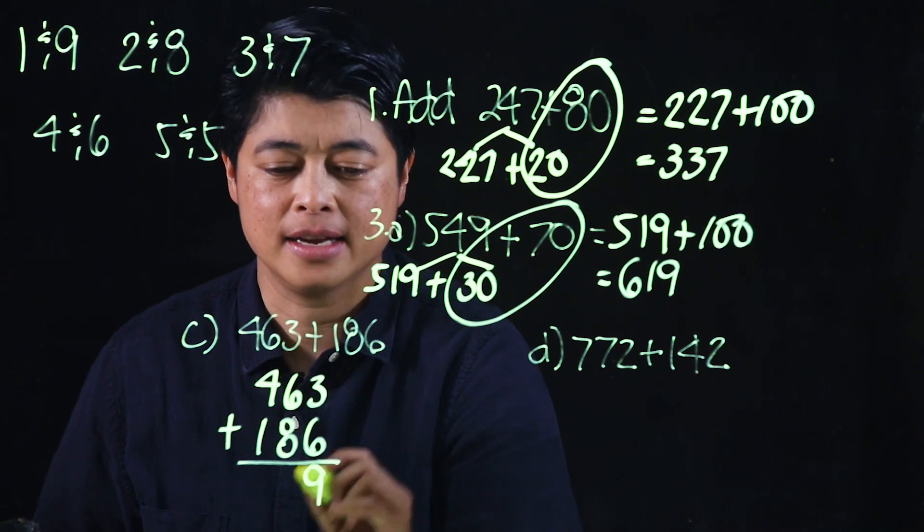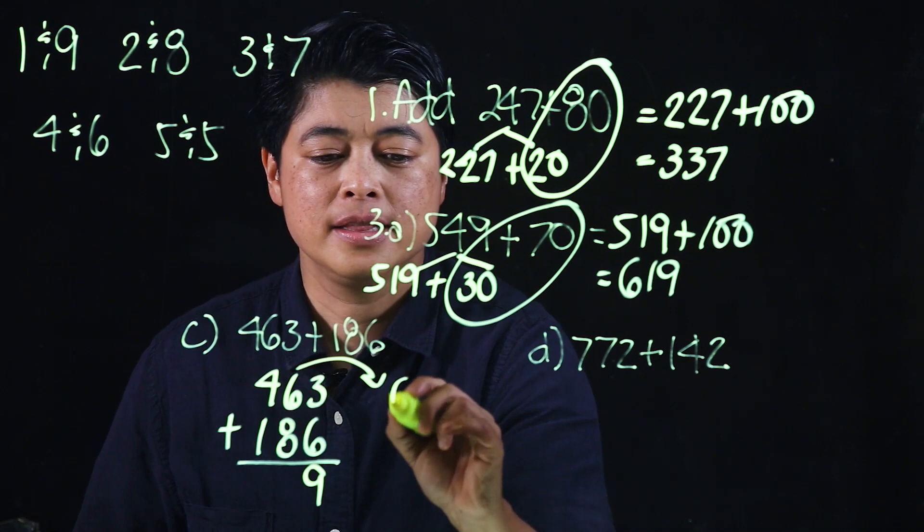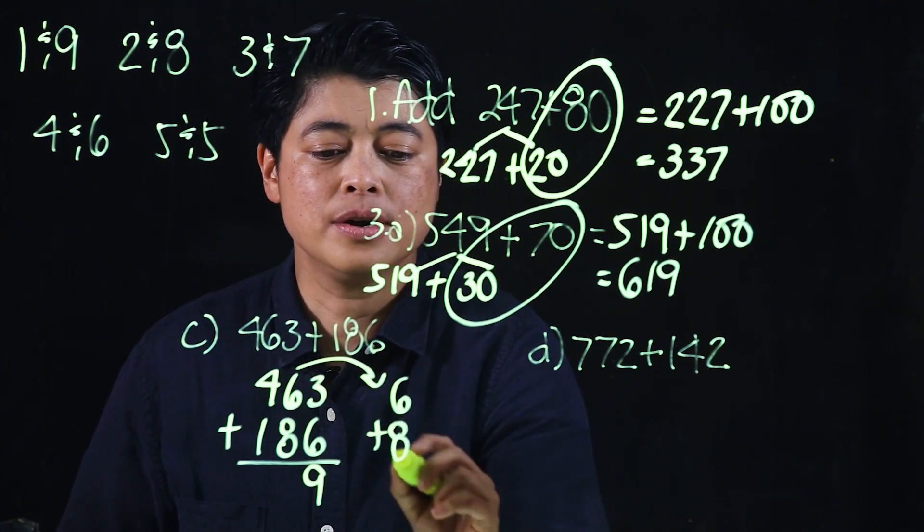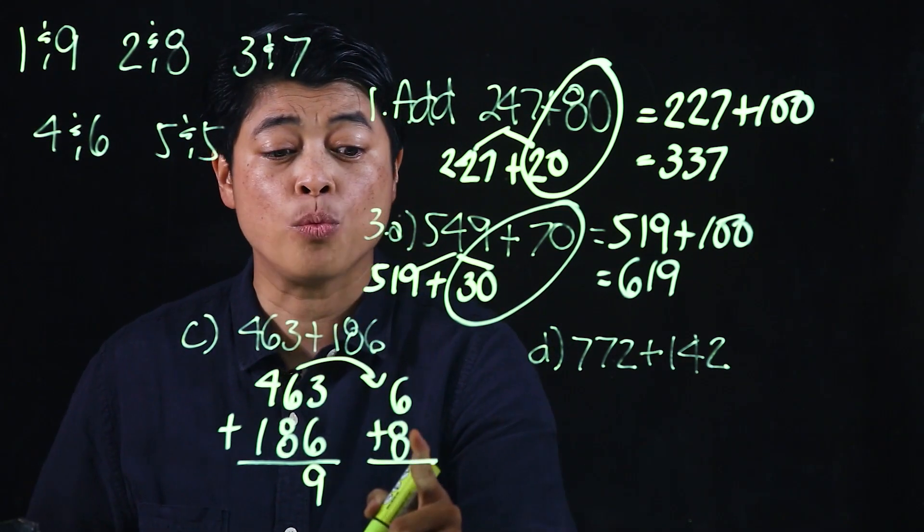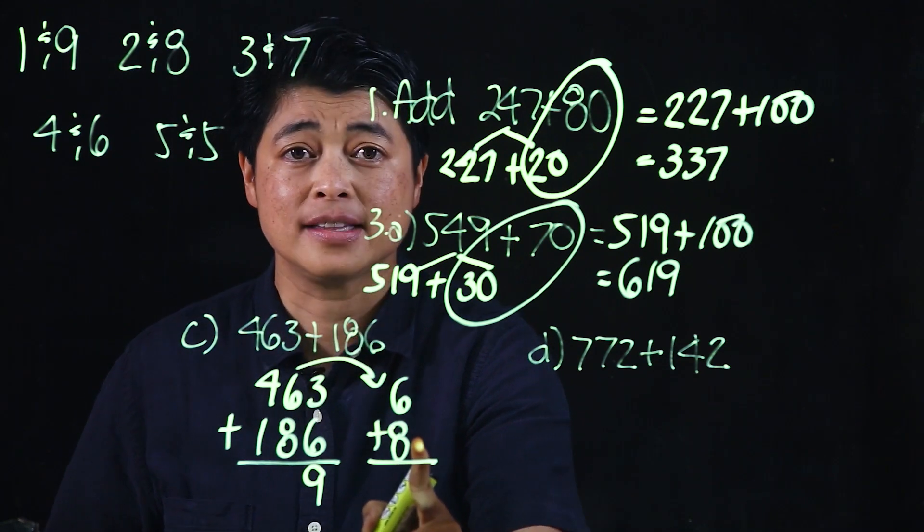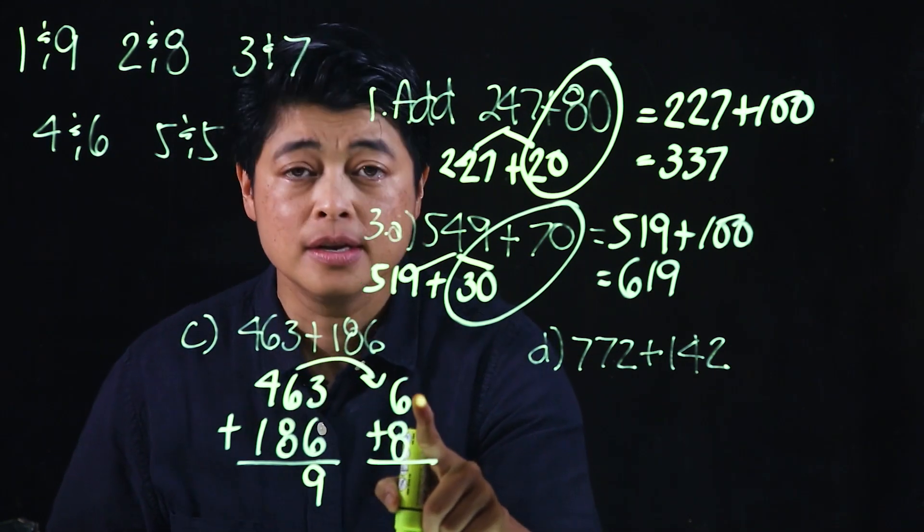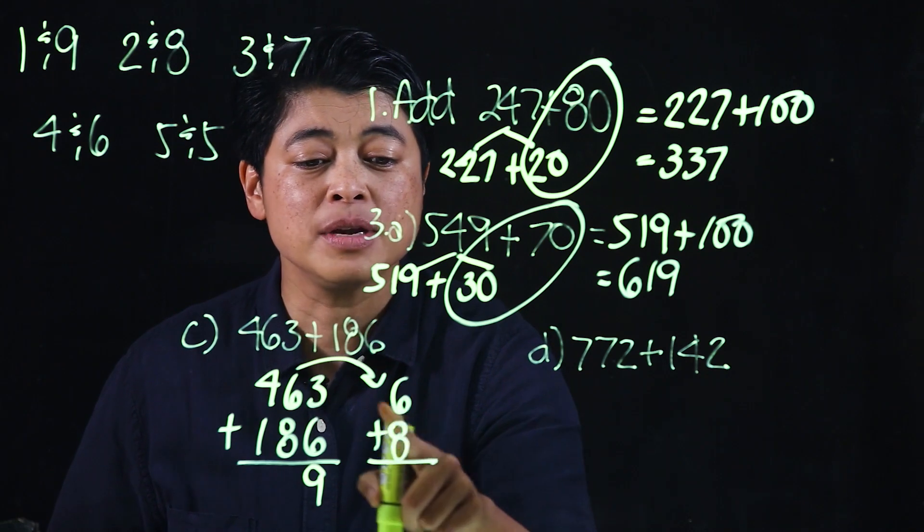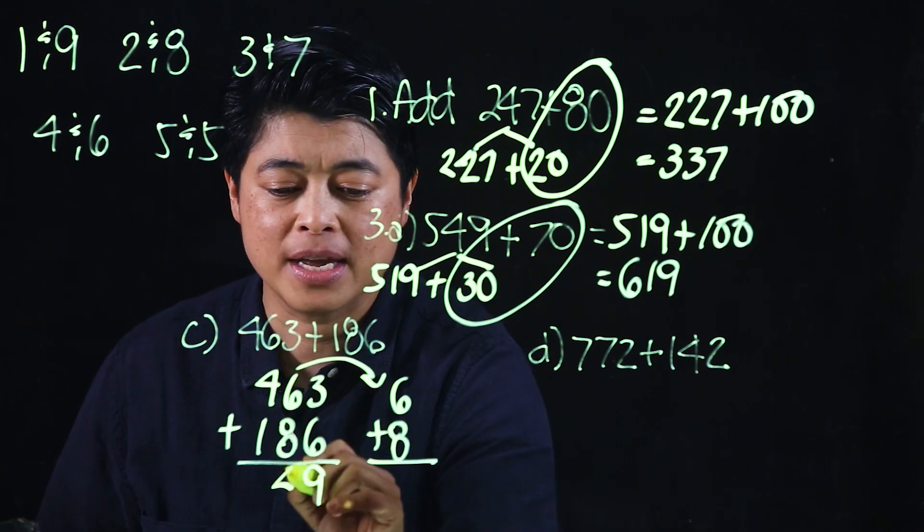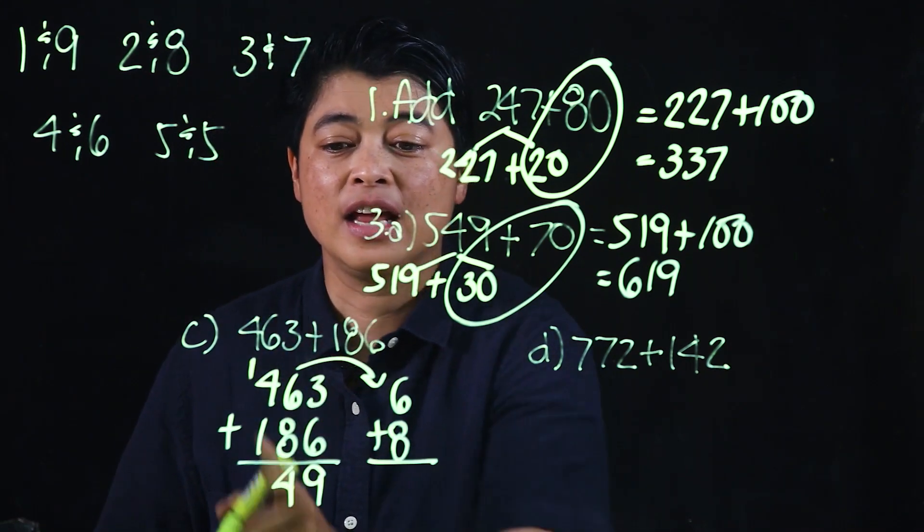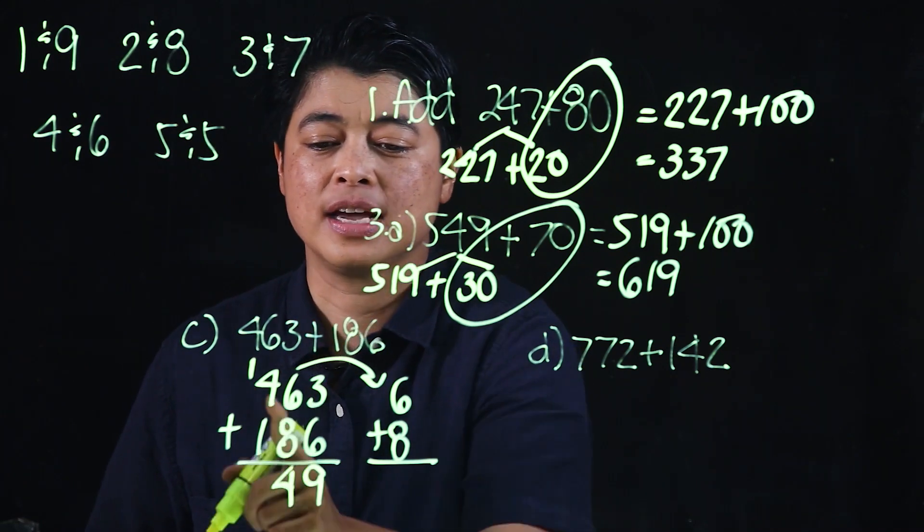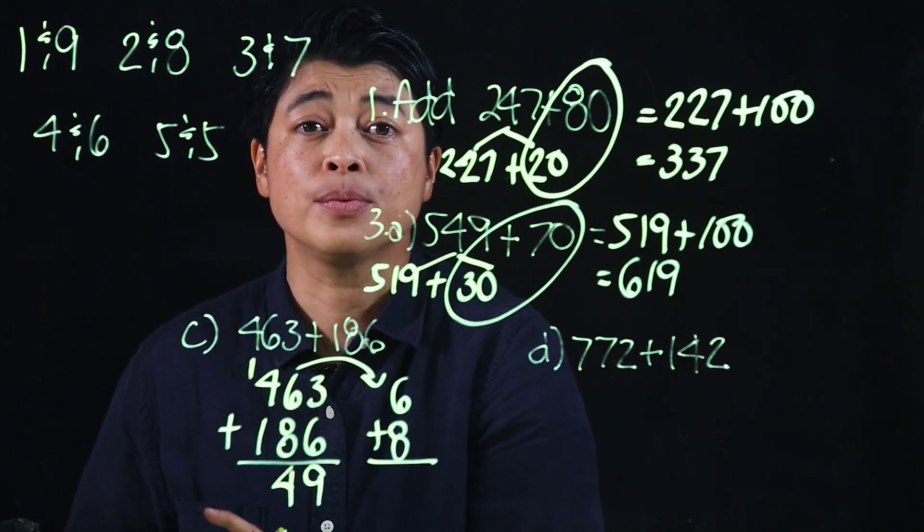This is 6 plus 8. For consistency, we start with 8. We need 2 more to get to 10, so that means we have an extra 4, which makes this 14 and we carry. So that's 4 plus 4 plus 1 is 5, plus 1 is 6.